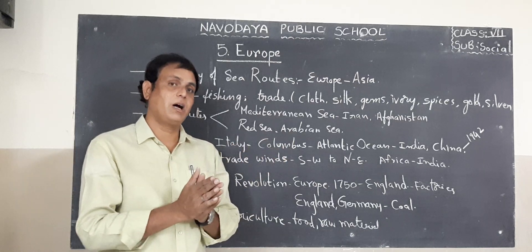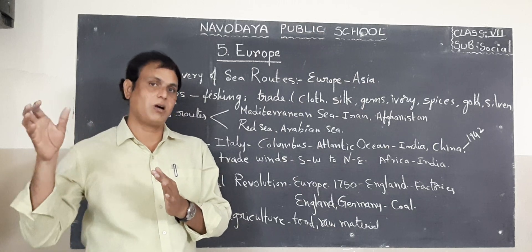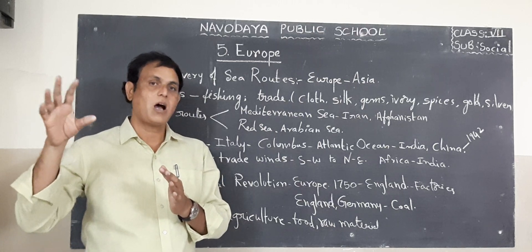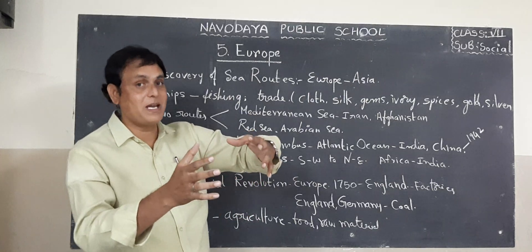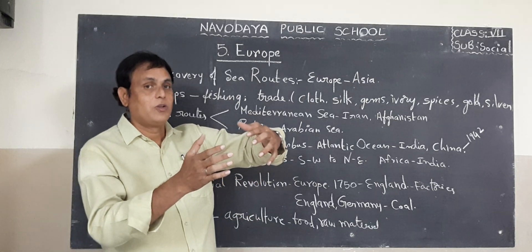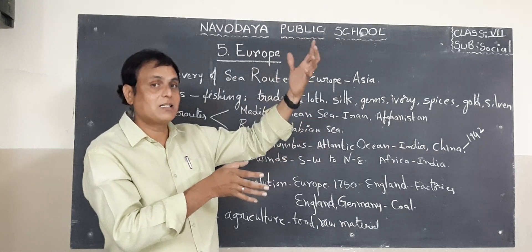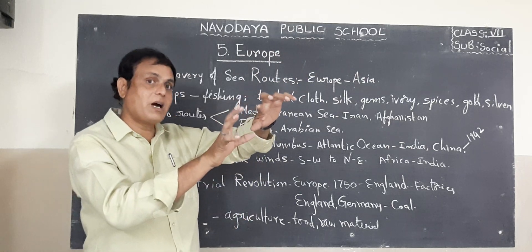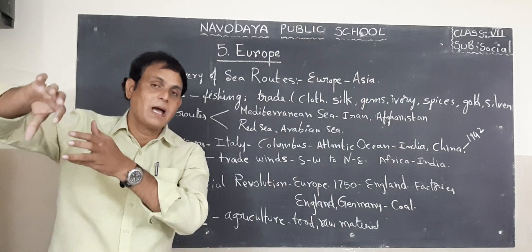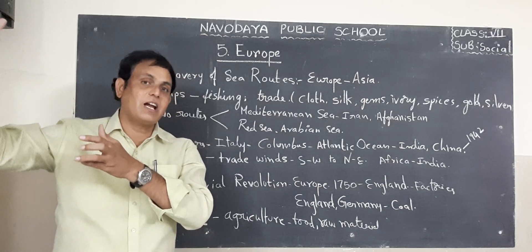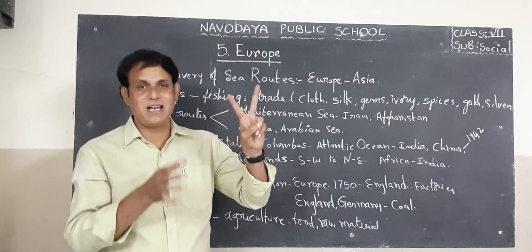Vasco da Gama also discovered the sea route to our India. He reached Calicut and entered our country India. These two winds — Westerlies and Trade Winds — helped these European traders and sailors on their voyages.